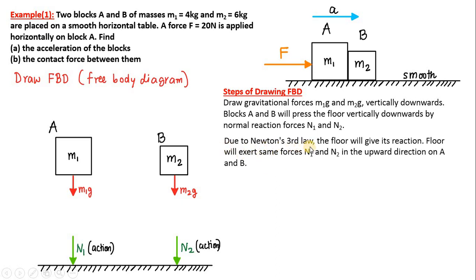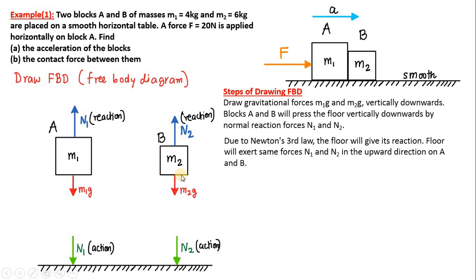Now, by Newton's Third Law, the floor will give its reaction. If block A presses the floor down with force N1 — that is the action — then the floor will exert the same magnitude of force in the opposite direction on block A, which is called the reaction. So the floor exerts forces N1 and N2 in the upward direction on blocks A and B respectively. Action and reaction are equal and opposite forces acting on different bodies.